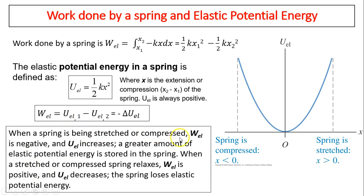While a spring is being stretched or compressed, W_el is negative and U_el increases — so when the spring does negative work, its energy increases and a greater amount of elastic potential energy is stored. Once stretched or compressed, the spring relaxes back to its natural position. That's when the spring does positive work and its energy decreases. This is much like gravity: when gravity does positive work, the object's gravitational potential energy decreases, and vice versa.